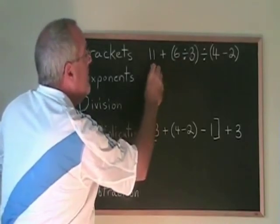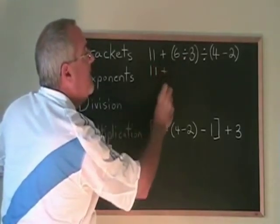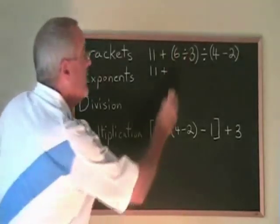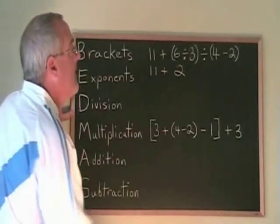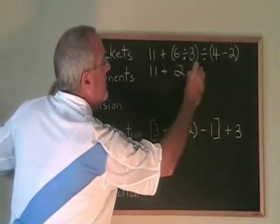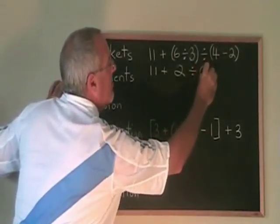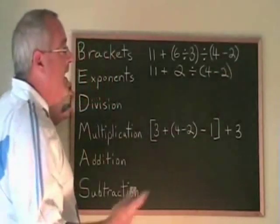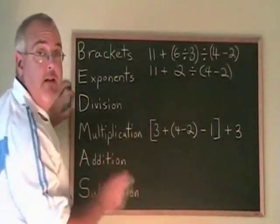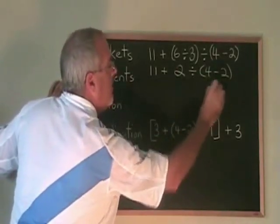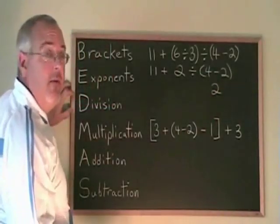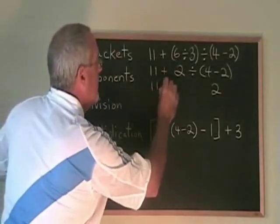So we are copying down 11 plus. 6 divided by 3 is 2. We write the 2 in the space of the bracket. Then we copy down the rest. Divided by another bracket, 4 minus 2. Now there's only one bracket left, so that's the next thing we have to do. 4 minus 2 is 2. We write the answer in the place of the bracket and we copy down the rest.